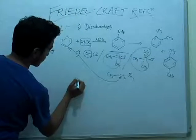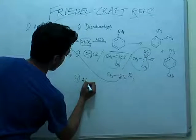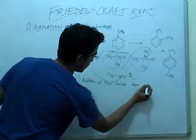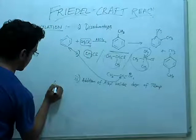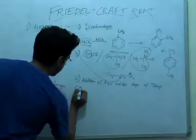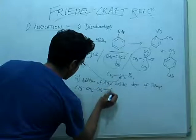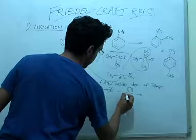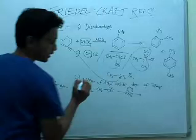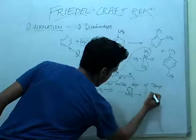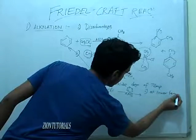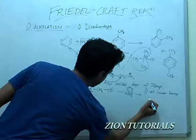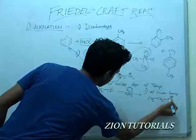Third point: the addition of alkyl halides is also dependent on temperature. For example, if we take a primary alkyl halide like CH3CH2CH2Cl and react it with benzene in the presence of AlCl3, two cases are possible. If we are not giving heat — that is, at lower temperature — the carbocation formed is the less stable primary carbocation, and we directly add CH3CH2CH2 positive to benzene.